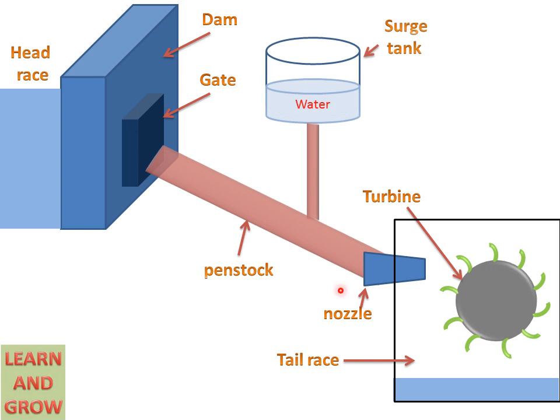There is a surge tank connected to the penstock which is used for increasing life of the penstock. When suddenly stock of water takes place, then water will create back pressure in the penstock. So water will be collected in the surge tank and penstock will not be affected from the back pressure. So surge tank will increase the life of the penstock.